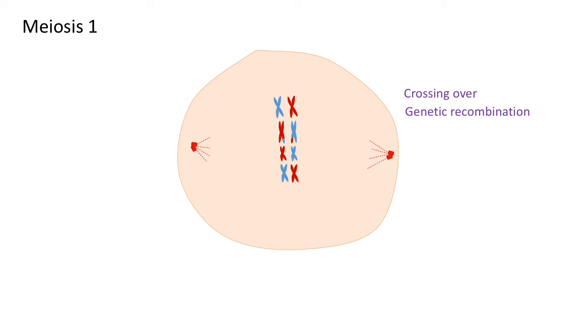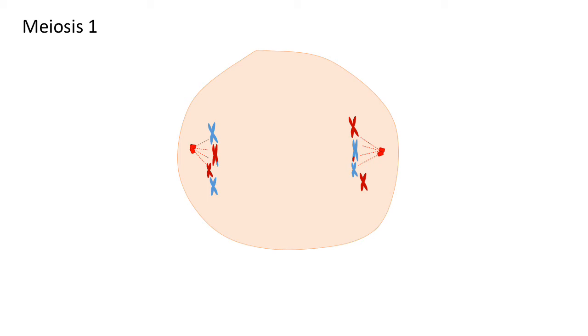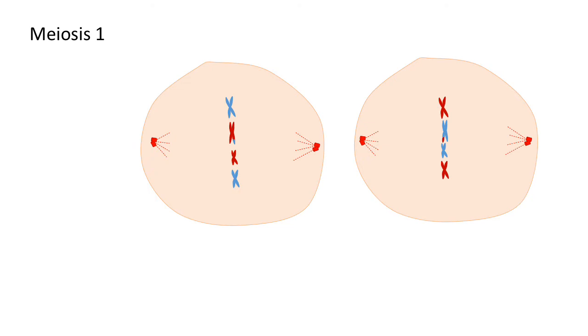Now let's continue with the process of meiosis. From here, metaphase one, we'll go through the animation. And so now we're at the end of meiosis one. We've got these two cells in which the homologous chromosomes have been separated.